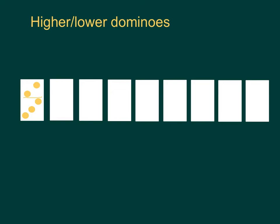Then the first player is going to have the first go, and what they have to decide is, is the next domino, the one that's here, going to be higher or lower than 5, the first one? They choose higher or lower, and then turn one over.